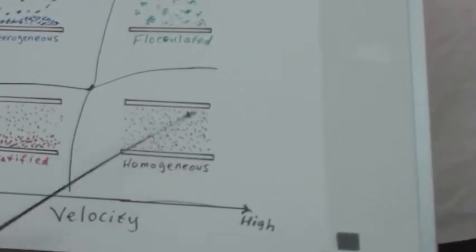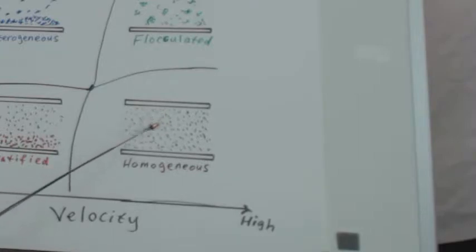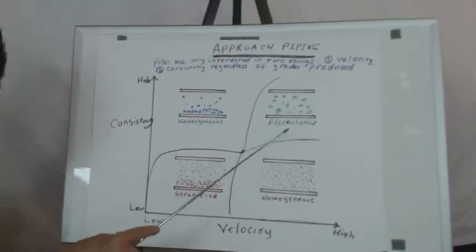Here is ideal condition what we call homogenous. Low consistency, of course lower than the critical, and high velocity. You need these fibers to be dispersed before you deliver them to the head box and the jet gets out of the slice out there.